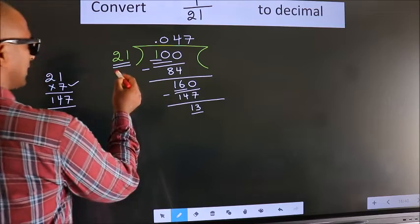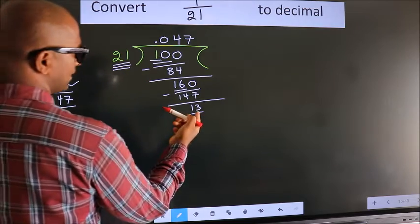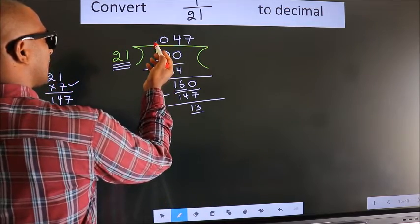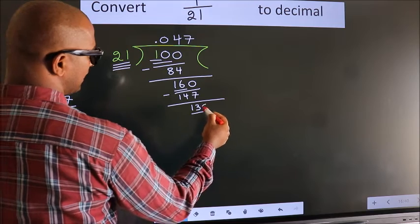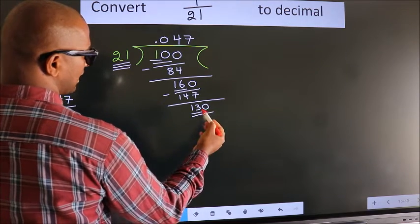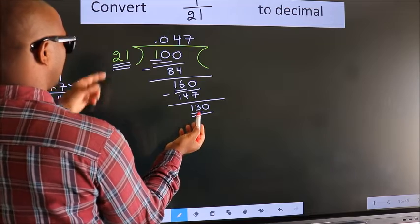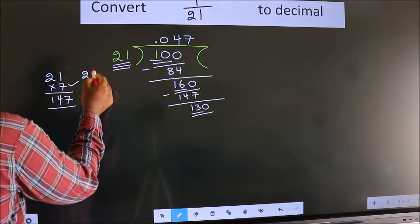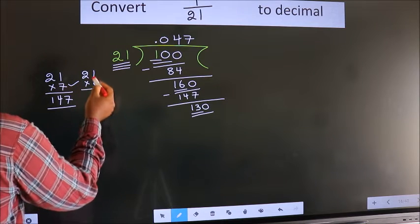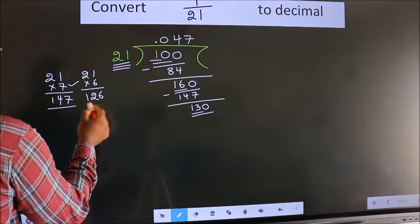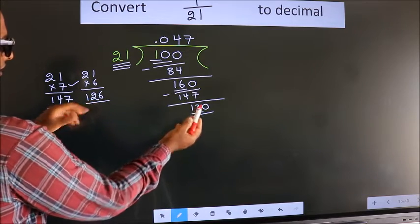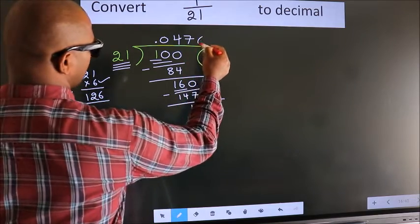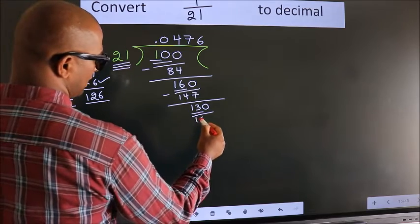Here we have 13, here 21. 13 is smaller than 21, and we already have the decimal, so we can directly take 0 — so 130. A number close to 130 in the 21 table: let us go with 6. 6 times 1 is 6, 6 times 2 is 12 — so 126, which is close to 130. We go with 6, so 21 times 6 is 126.